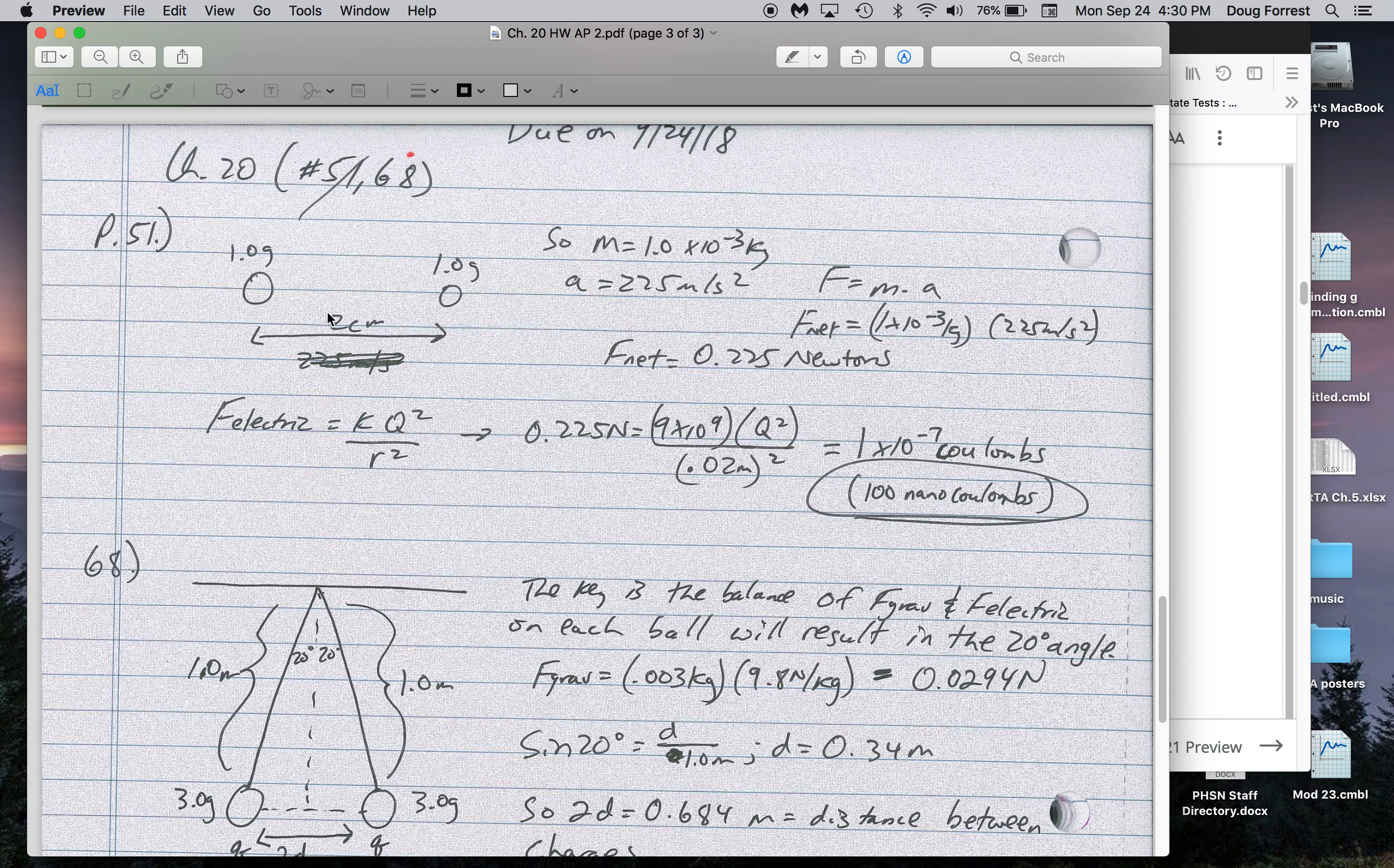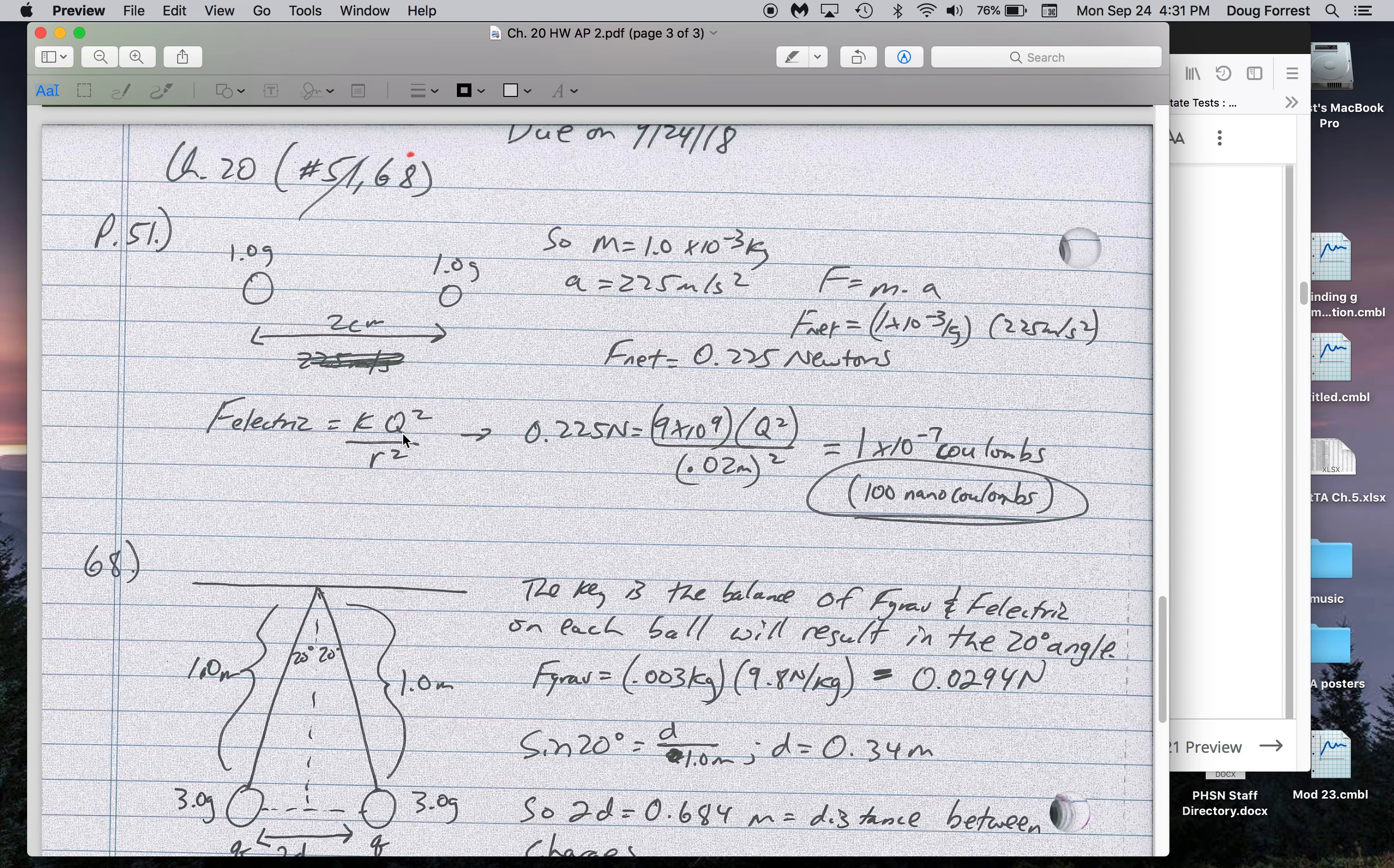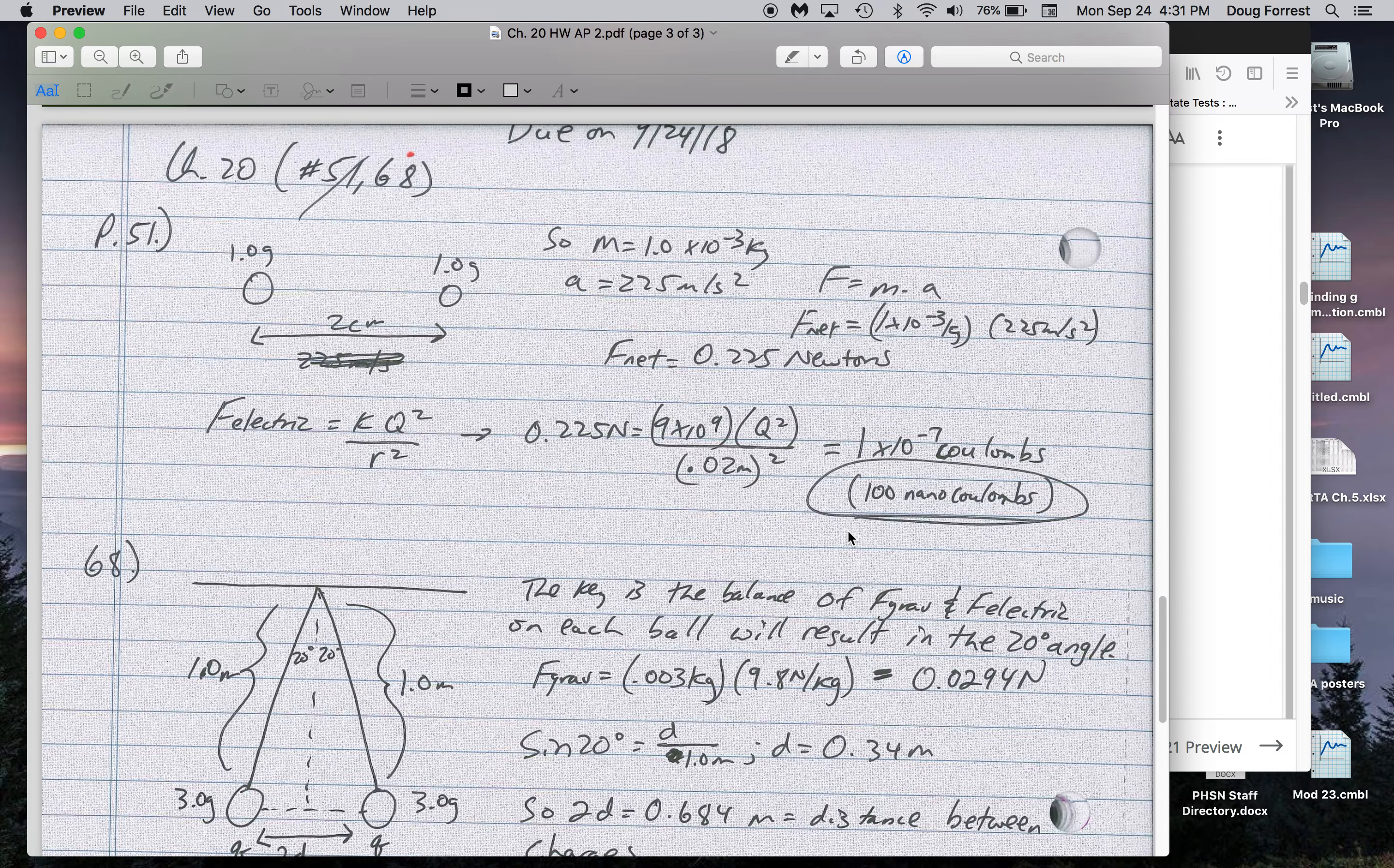51. Two 1-gram objects 2 centimeters apart. The net force between them is 0.225 Newtons. They're equal in strength, so I'm going to use Coulomb's law formula. It's really Q squared here because each Q is the same magnitude, so Q1 times Q2. And that comes out to be 100 nanocoulombs or 1 times 10 to the negative 7 coulombs.